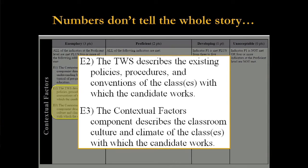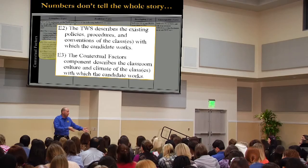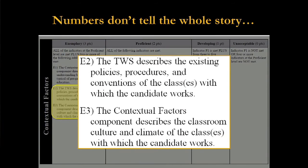Keep in mind that the numbers required by the proficient column don't tell the whole story. The first exemplary indicator is about policies and procedures — do you think your supervising teacher has stuff that he or she already does? If you come in and ignore that and just do your own thing, that would not be good. I wouldn't upset the apple cart with your cooperating teacher. E3 — every classroom has a climate and a culture; it's got a feel that develops. If you're sensitive to that, you can reflect on how they treat each other, the disposition of the class, their shared goals. That would be the second exemplary indicator.